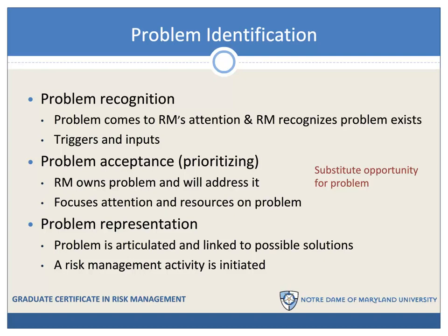In a broader sense, this is the prioritization task that many organizations face: what are we going to be working on and when? The third step in the problem identification process — now that you have recognized a problem and decided to focus attention and resources on it — is problem representation. This is when you articulate the problem for yourself and for your organization. Articulating the problem automatically begins to link it to possible solutions. Once the problem is represented, a risk management activity can be initiated.